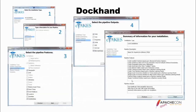So Dockhand — what does this look like? It's a wizard: start with step one, move to two, three, four, and five. Number one, you just select your installation type — do you want a local installation or a REST server Docker bundle? Number two, you can type whatever description you want for your pipeline. This is going to be a comment in your pipeline file — you'll probably never see it, but it could be nice to have.